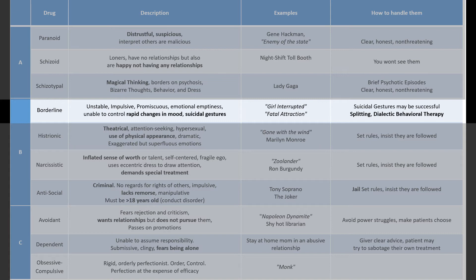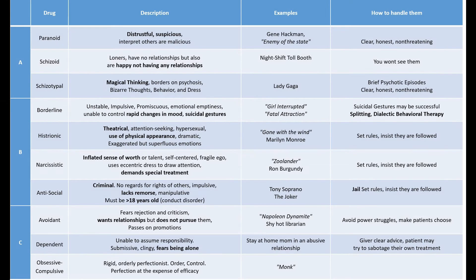Think of Angelina Jolie's character in the movie Girl Interrupted or Fatal Attraction — emotional, flip on a dime, and just crazy. In Cluster B, patients will try to change the rules, they will be manipulative, and they will be demanding. The way you handle these patients is to follow the rules, set those rules, and do not deviate. Be firm but don't accuse them of anything either, because then they will start treating you as the enemy.